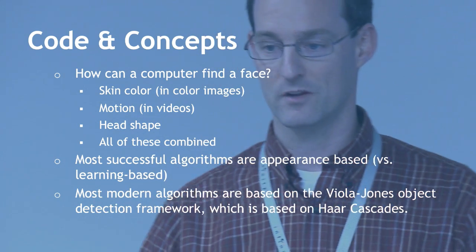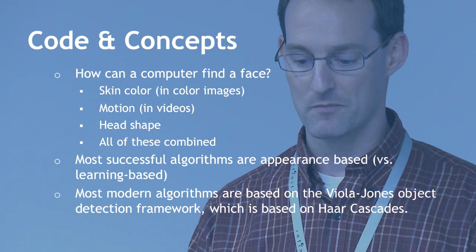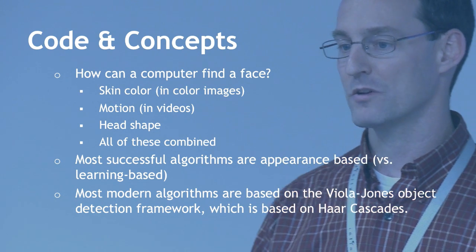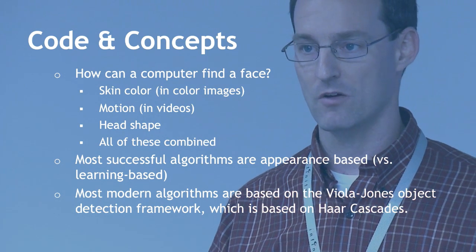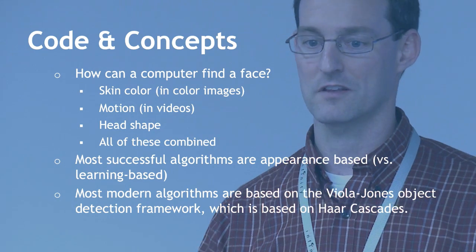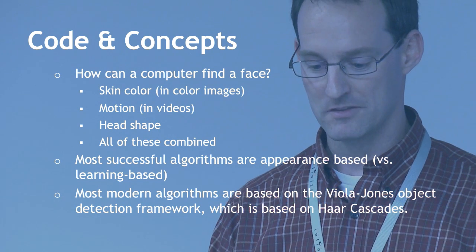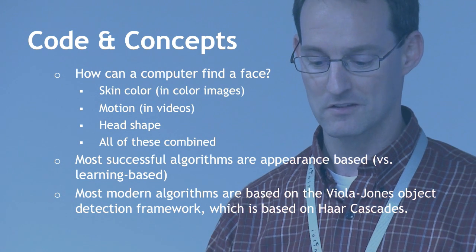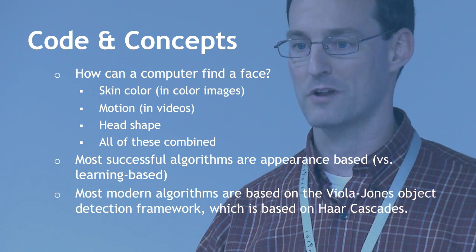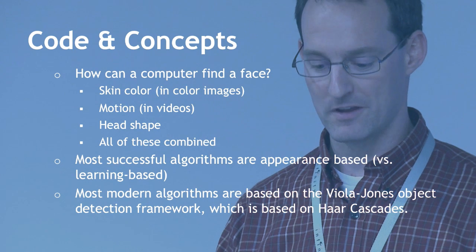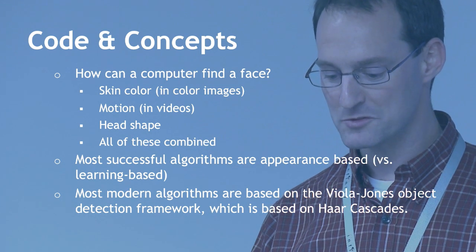How can a computer find a face? There are a number of ways, similar to how humans process things. You can look at skin color to pick out a face from a background image — most useful in color images. There's also motion: if someone talks, you can detect the mouth moving. Head shape provides a silhouette against the background. Most modern algorithms are based on the Viola-Jones object detection framework, which uses Haar cascades — an appearance-based model.